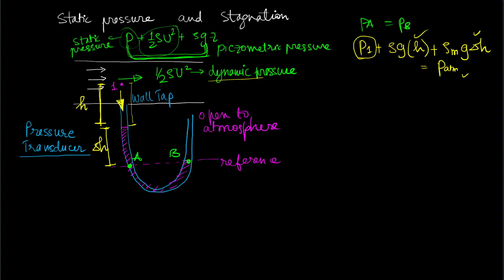Having no component of velocity in the tap direction means we are implicitly removing the dynamic pressure component. There is only a dynamic pressure component along the flow direction, so we measure only the static component. With a smart arrangement of the manometer, you can actually measure the piezometric pressure directly.